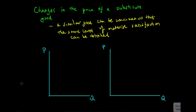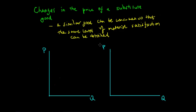In this lecture we will be looking at the concept of how changing the price of a substitute good can affect the market for another. A substitute good is a similar good which can be consumed so that the same level of material satisfaction can be obtained. Because economics focuses around maximising our living standards, we want a good that satisfies our needs and is low cost. If there are substitute goods, we will choose the low cost alternative which minimises our opportunity cost.